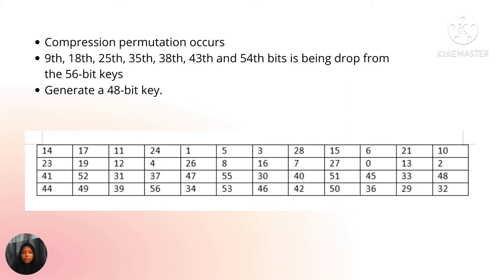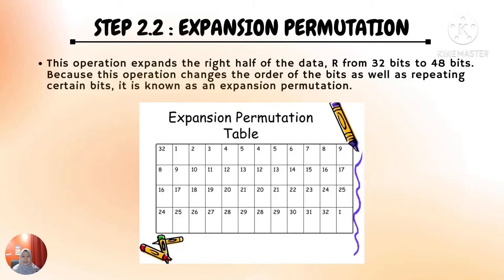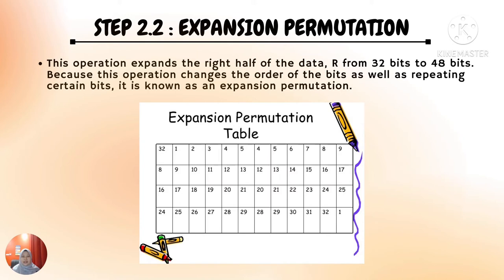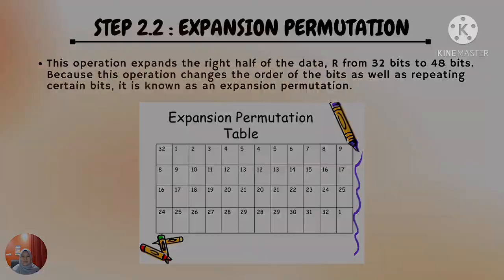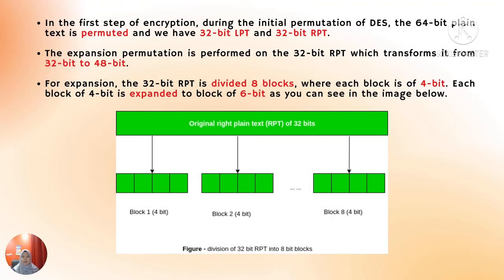Thank you, Hanim. Now let's move on to step 2.2, expansion permutation. During expansion permutation, the RPT is expanded from 32 bits to 48 bits. This operation expands the right half of the data from 32 bits to 48 bits by changing the order of bits as well as repeating certain bits — hence it is known as an expansion permutation. The 64-bit plaintext is permuted and we have 32-bit LPT and 32-bit RPT. The 32-bit RPT remains untouched during the process.